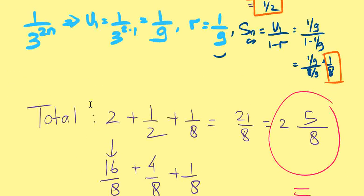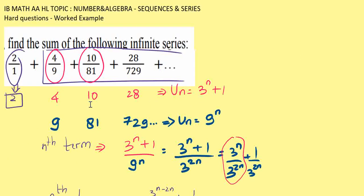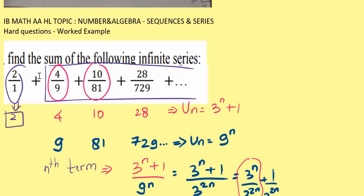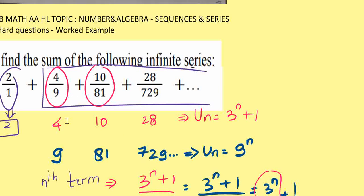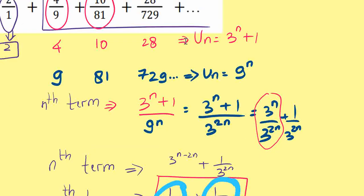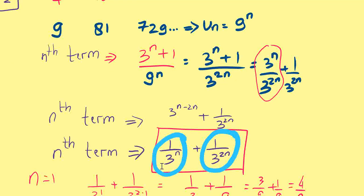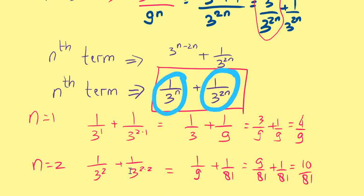The idea is: since this is not a simple sequence, we cannot find the ratio or the common difference for the whole series. So we break it up — we keep the 2, and we break the remaining terms into numerator and denominator to find the n-th term formula. We combine them as a fraction and simplify, then break it into two terms, each of which can be treated as a geometric series so we can find their infinite sums.